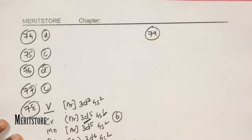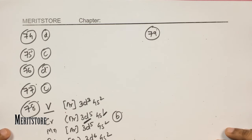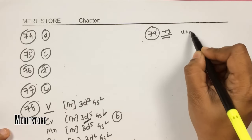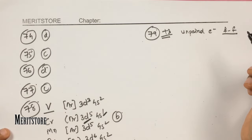Question number 79: which statement about lanthanoid chemistry is incorrect? Option A — because of the large size of lanthanide ions, bonding is predominantly ionic — correct. Option B — ionic size decreases with increasing atomic number (lanthanoid contraction) — correct. Option C — lanthanoid +3 compounds are generally colorless — this is incorrect, because lanthanoids have unpaired electrons that undergo f-f transitions, imparting color to their compounds. Hence option C is incorrect.